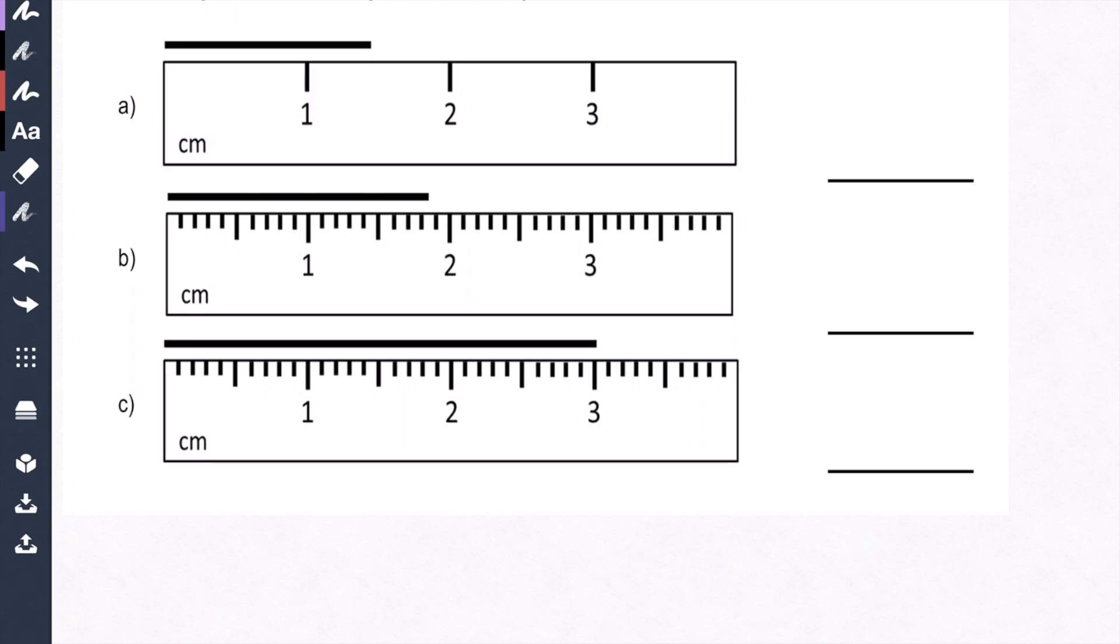Now, the first ruler, ruler A, we're dealing with this one right here, doesn't have any small hash marks. It only has large hash marks. Notice these hash marks are measuring one centimeter. This right here is the one centimeter mark. This is the two centimeter mark. This is the three centimeter mark. So this ruler, you can read the one centimeter mark.